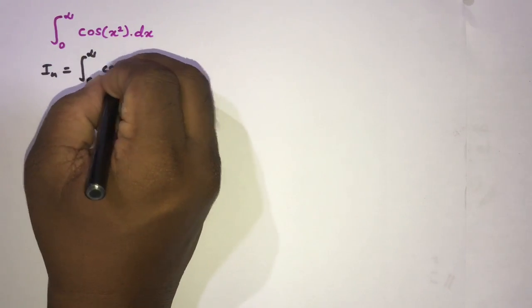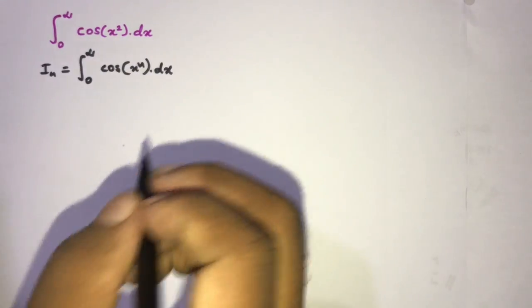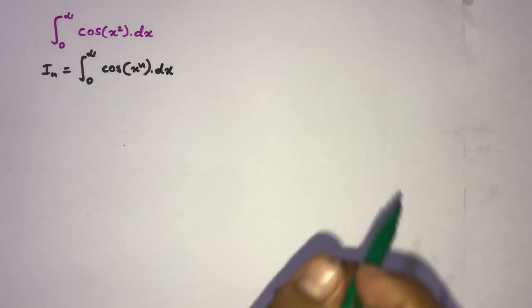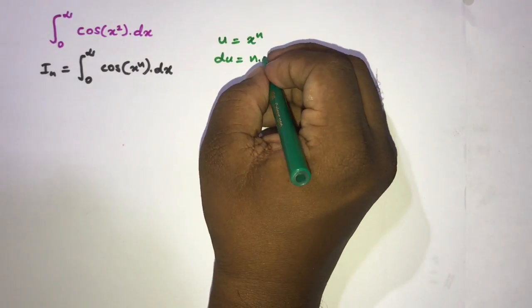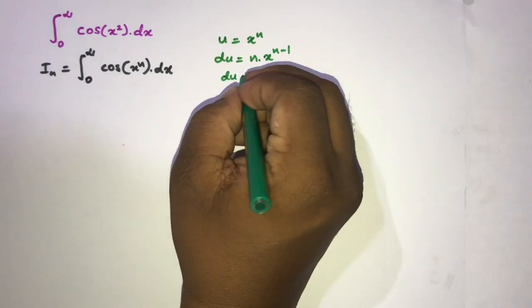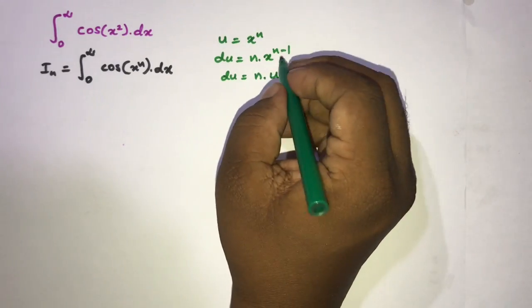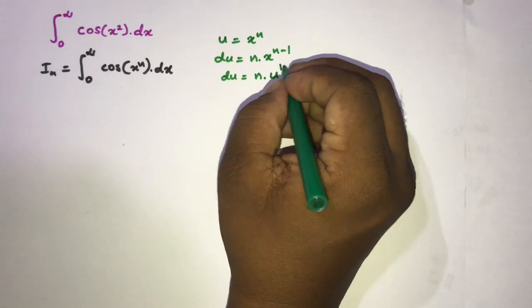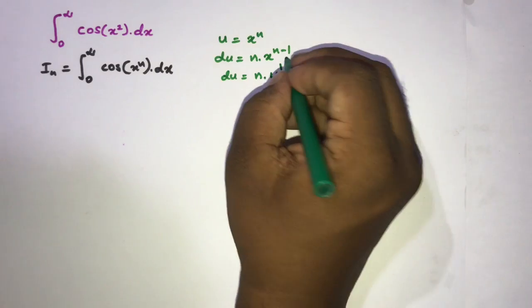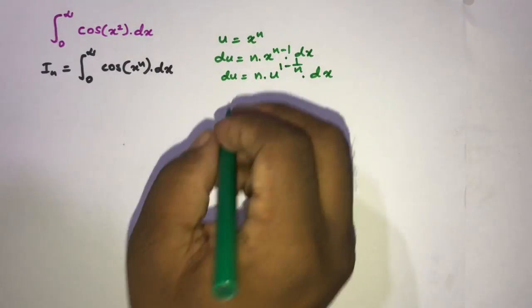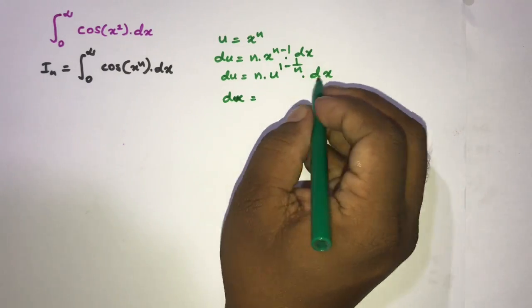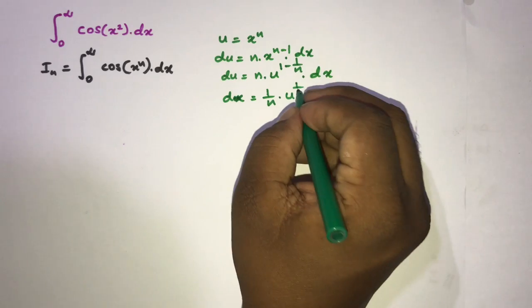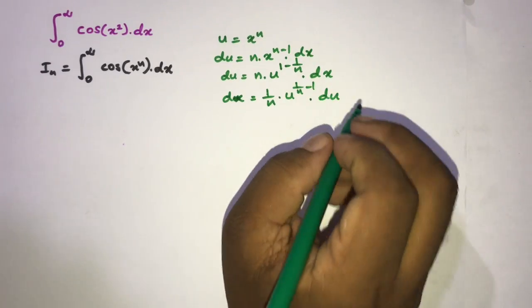First, I am going to define the integral I_n as the integral from zero to infinity of cosine of x^n dx. To evaluate this integral, I will take the substitution u = x^n. Differentiating gives du = n times x^(n-1) dx. Since x = u^(1/n), we get dx = (1/n) u^(1/n - 1) du.